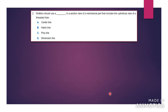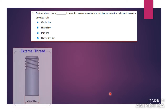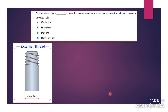Number two says: what type of line should drafters use in a sectional view of a mechanical part that includes a cylindrical view of a threaded hole? So let's say you have a cylinder with a threaded hole. What type of line would you use to show the measurements of the threaded hole? The answer would be a center line, because since it's a circle, you want to show the center of the circle because all the other sides would be the same dimension or the same radius from the center.